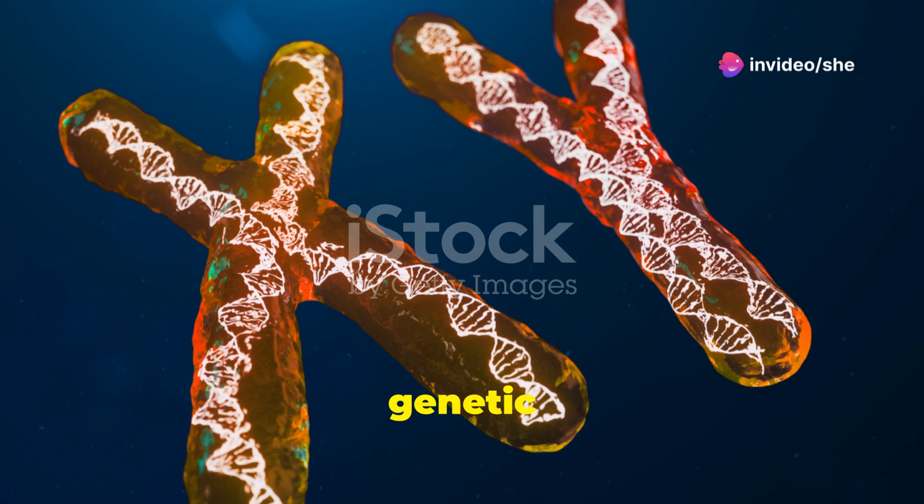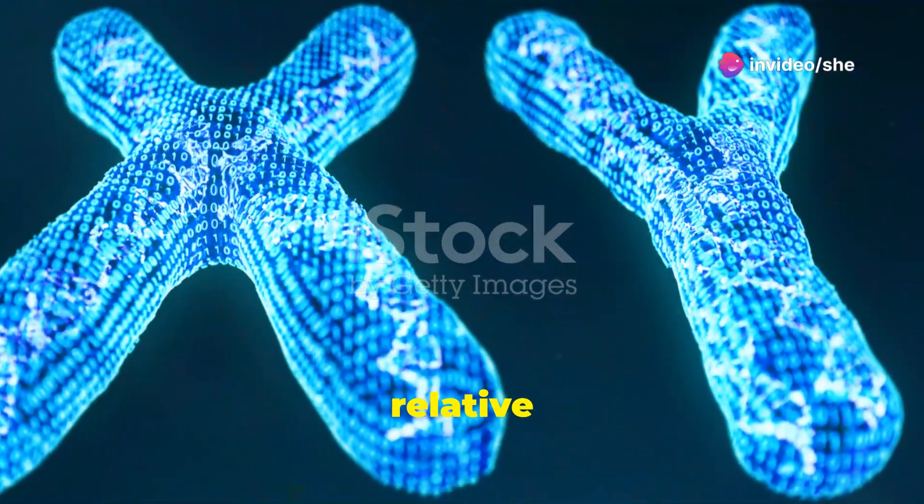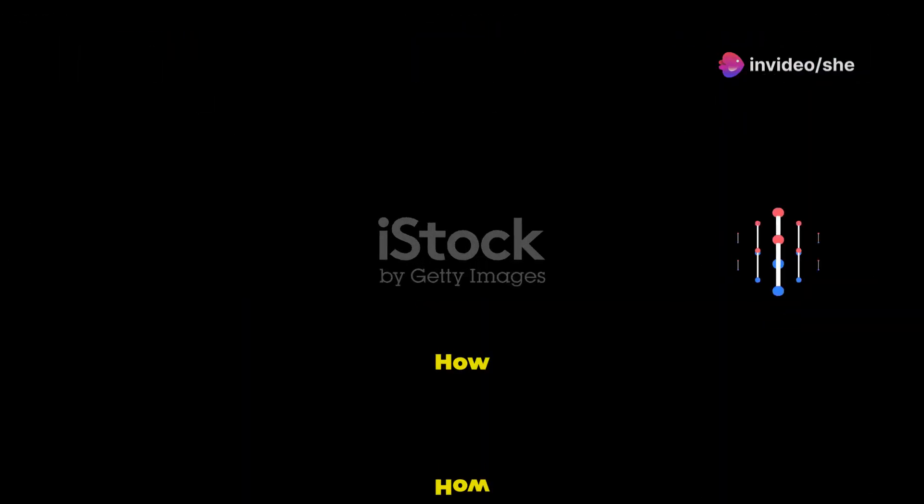A two-point test cross is a type of genetic cross used to determine the relative distance between two genes on a chromosome. How it works.